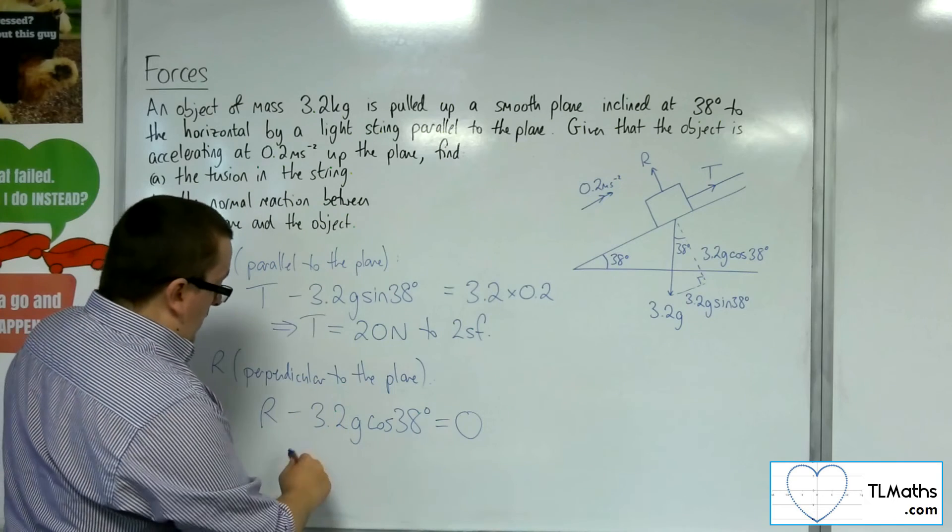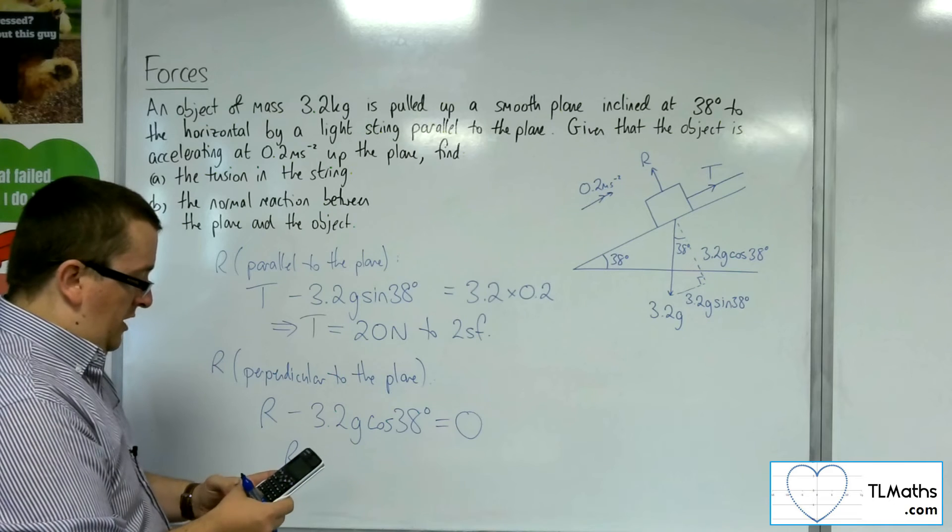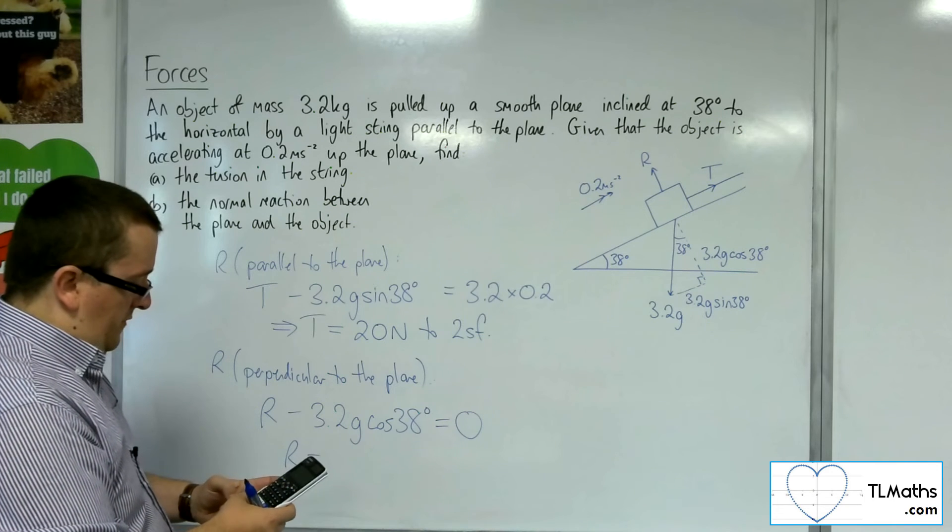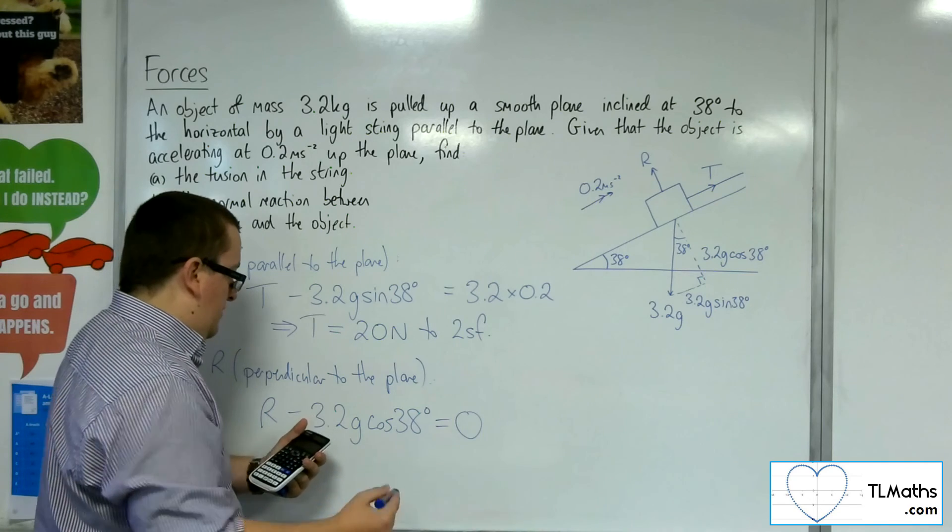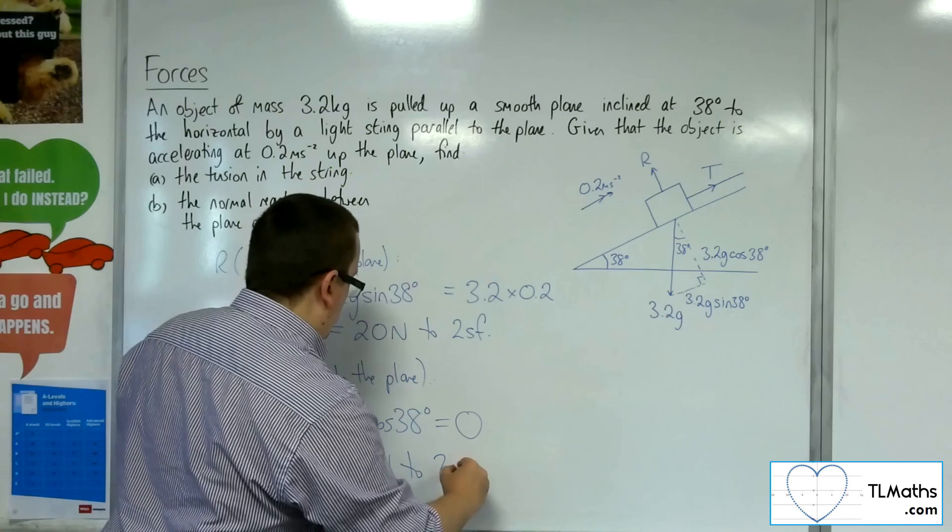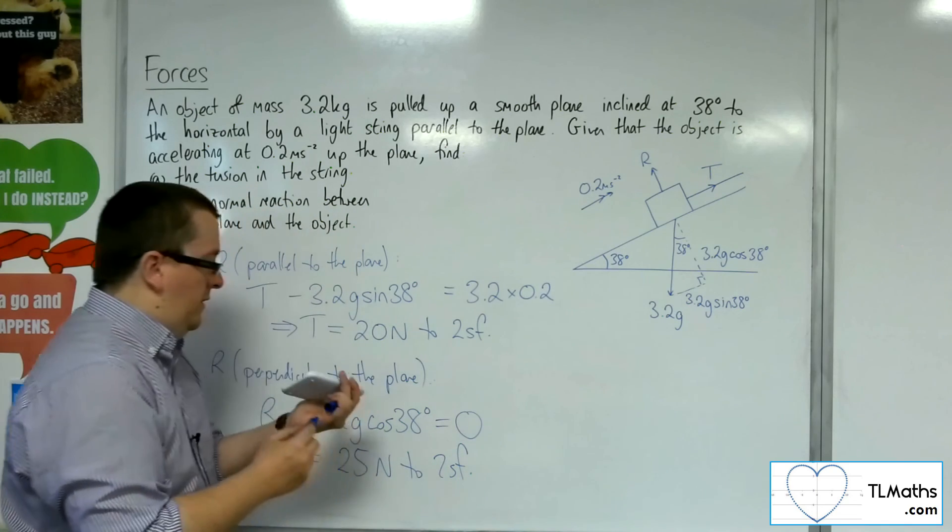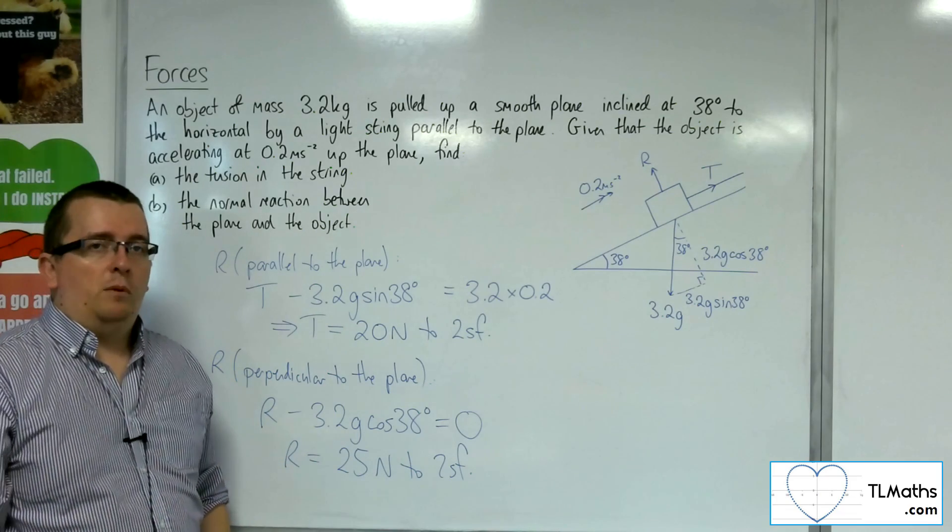And so R is just this 3.2g cos 38. So 3.2 times 9.8 times cos 38. And that's 24.712. So 25 newtons to two significant figures. So that is how we can solve this problem.